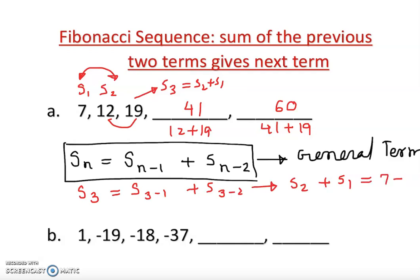S2 plus S1 and I clearly know what is my S1. S1 is 7 plus S2 is 12 and my S3 obviously is going to be 19 and that's how you clearly see down here.